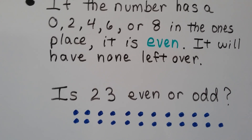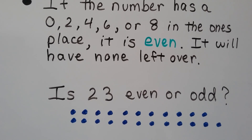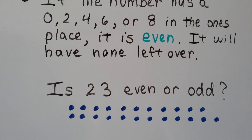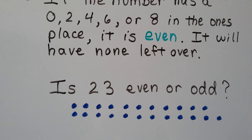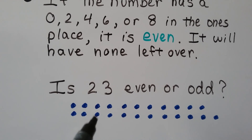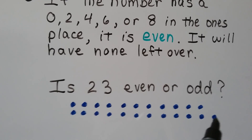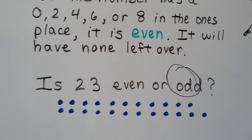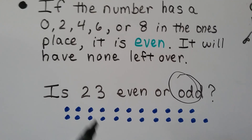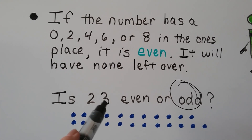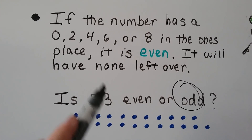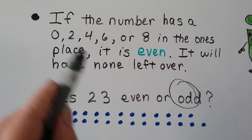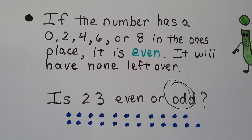Is 23 even or odd? Do you see that 1 all by itself? That means if we circle all these pairs, there's going to be one left over, so it must be odd. And it ends in a 3 — it's got a 3 in the ones place, so it's not even.